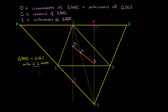The other relationship we've already shown between a medial triangle and the triangle it is a medial triangle of: the orthocenter of the medial triangle is the circumcenter of the larger triangle. So point O is the circumcenter of triangle ABC, but it is also the orthocenter of the smaller medial triangle DEF.